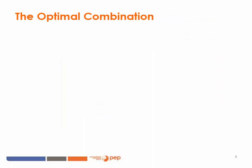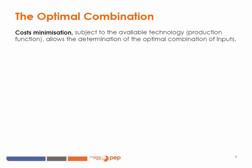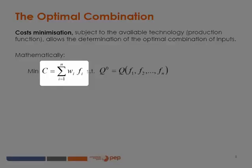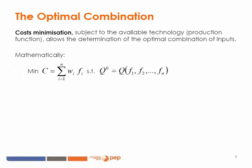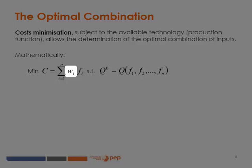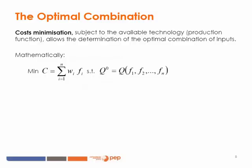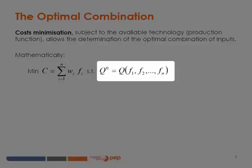As shown by the isoquant, there are multiple possible combinations of inputs that can be used to produce a given quantity of output. The optimal combination depends of course on the prices of each of these inputs. The producer seeks to minimize its costs subject to the available technology, described by its production function. Mathematically, it seeks to minimize the cost C, which is simply the sum of the product of the quantity used of each input F times its unitary cost WI, subject to the production function Q.